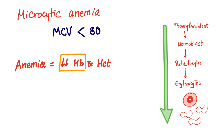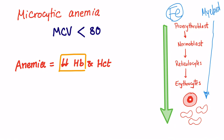So we have decreased hemoglobin, hematocrit, and the MCV is less than 80. Why are the cells small in microcytic anemia? To know that, let's take the example of iron deficiency anemia. When we discussed hematopoiesis — how red blood cells are formed through a cascade from the myeloid stem cell — the cells decrease in size as they progress.